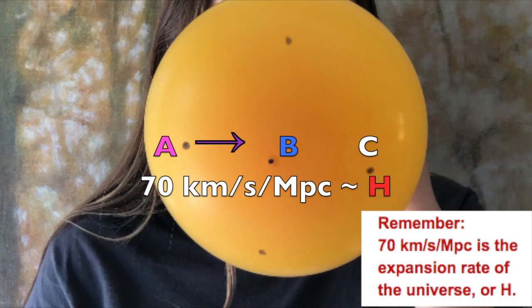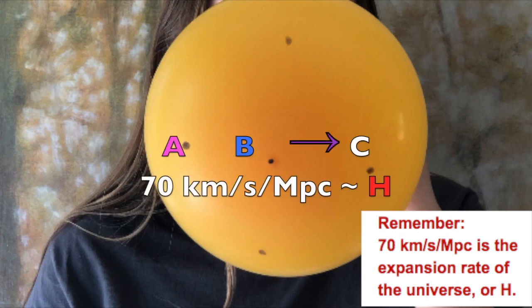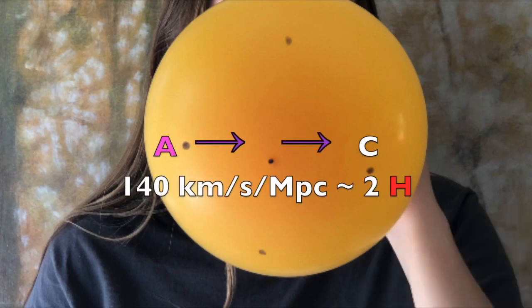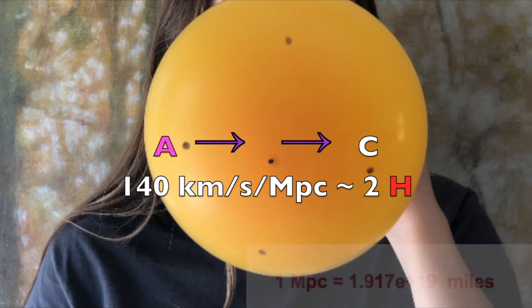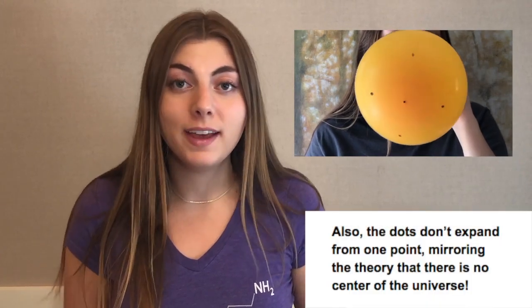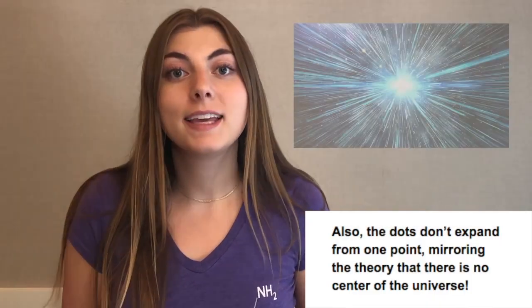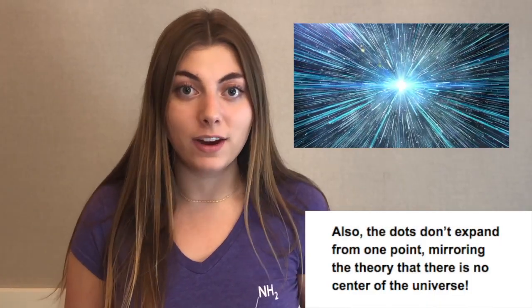point A moves away from point B at a rate like that of Hubble's constant. Point C is moving away from point B at the same rate, but when we measure the speed at which point C moves from point A, we notice that it's moving twice as fast. Note the dots themselves aren't moving — they're just being carried by the balloon. Similarly, galaxies are carried by the fabric of space-time.